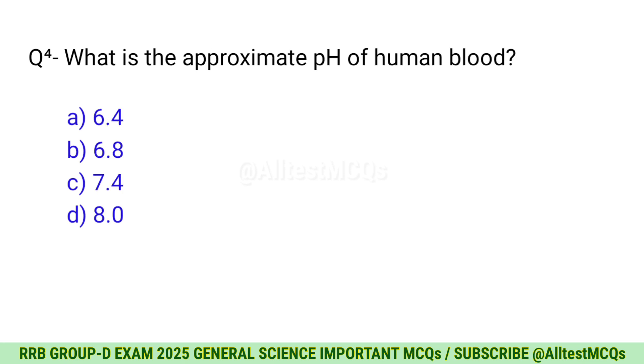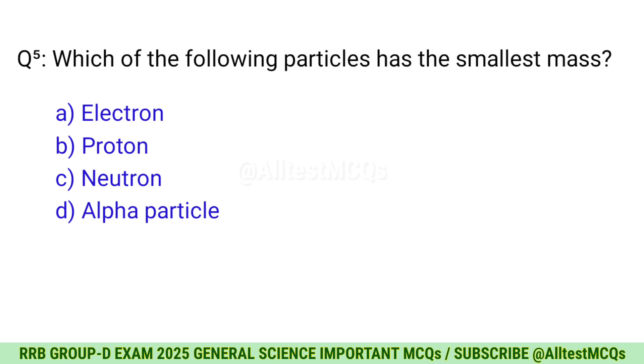Question 4: What is the approximate pH of human blood? C, 7.4. Question 5: Which of the following particles has the smallest mass? A, Electron.